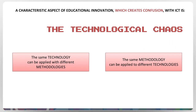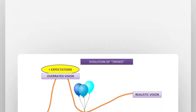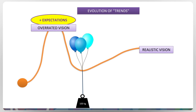Regardless of the innovation method, there are two aspects that cause confusion. One of them is the technological chaos, since a single technology can be applied to different methodologies, and using a single methodology can be applied to different technologies. Another aspect is the tendency of course.